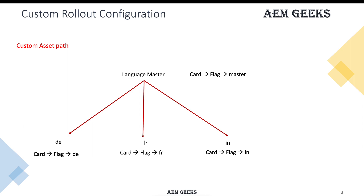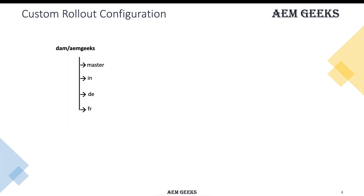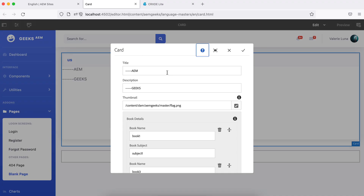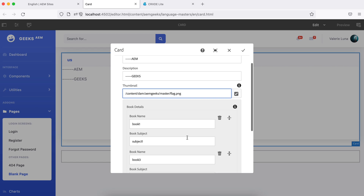Let's understand the DAM folder structure. I have country-specific folders in DAM assets — for example folders named 'in', 'de', 'fr' for respective countries — and for generic or common images I have a folder called 'master'. I have a component with a title, description, and a thumbnail property for the asset path, and a multi-field as well. We'll see the use of the multi-field in the second part of this tutorial.